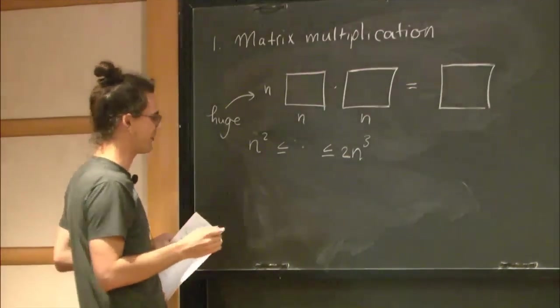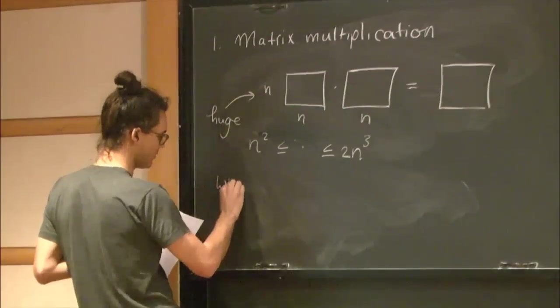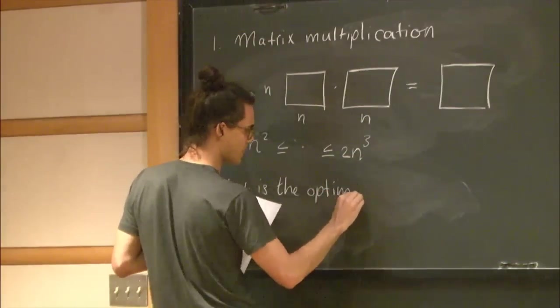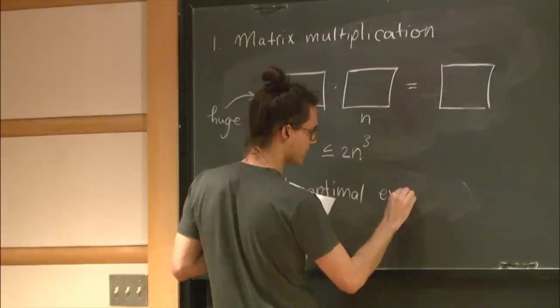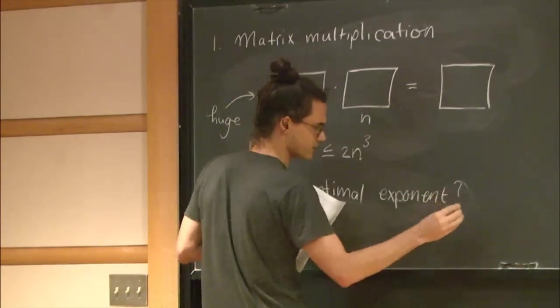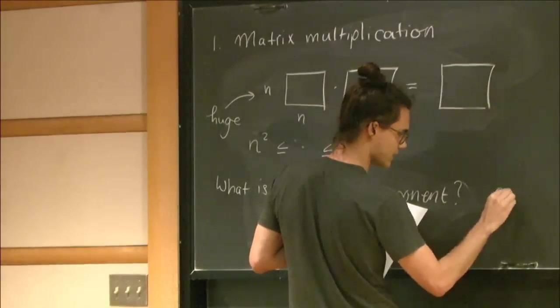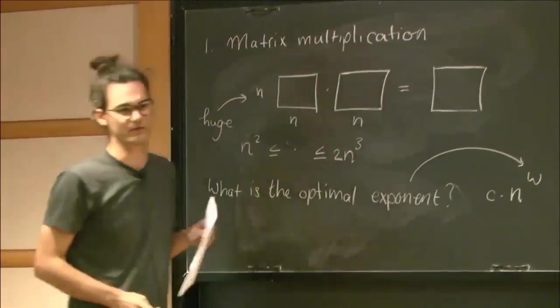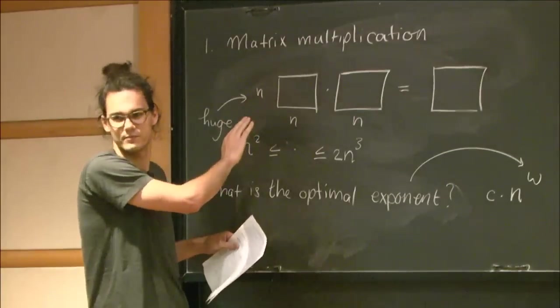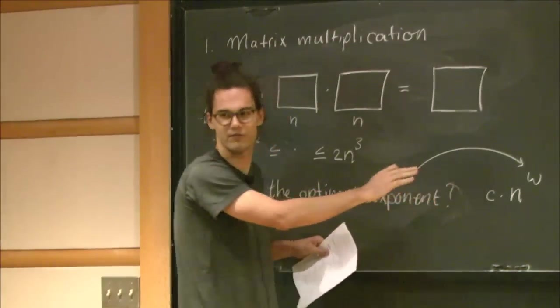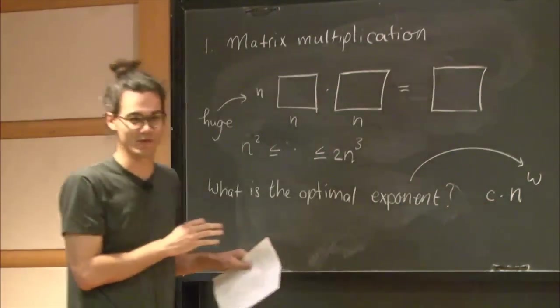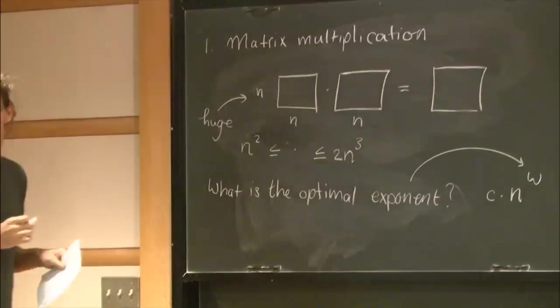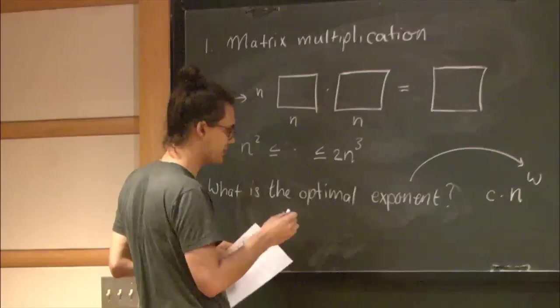So I'm interested in what is the optimal exponent. So I want to look at this exponent over here of n. So I don't care if I get a very big constant in front. So I only care about very large matrices. So I can have a very big constant in front, and then for n large enough, this becomes an interesting parameter. So what is the minimum, what is the smallest omega that I can put here? This is the matrix multiplication exponent. And it's called omega. So the question is, what's its value?